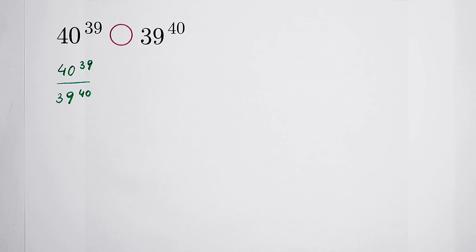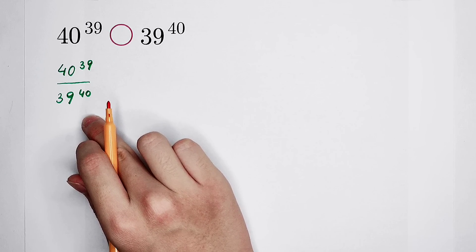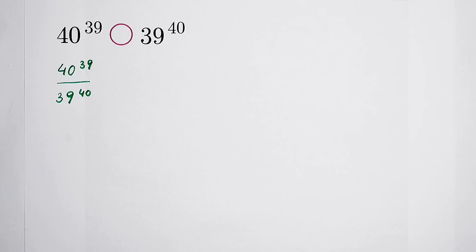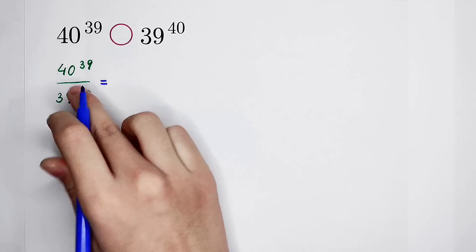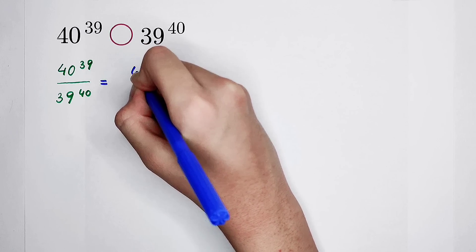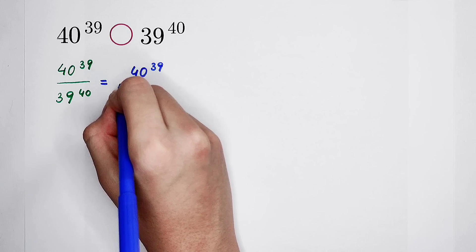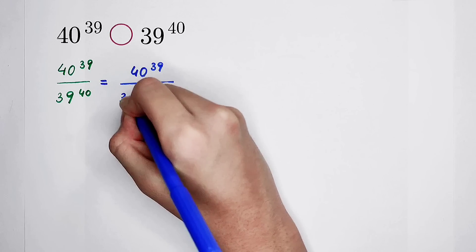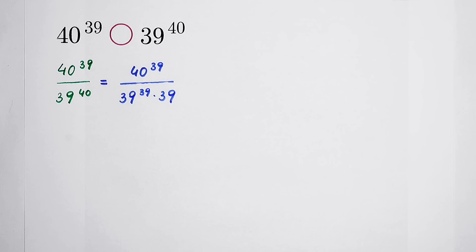Take a look at the exponents: 39 and 40. Maybe we can write the denominator, 39 to the power of 40, as 39 to the power of 39, then times 39. The numerator is still 40 to the power of 39. And the denominator is 39 to the power of 39, times 39. So this is our new fraction.